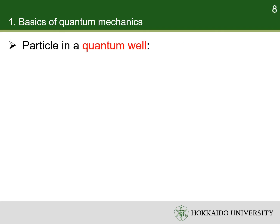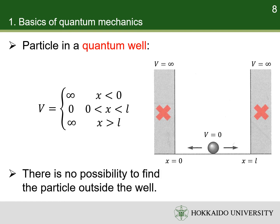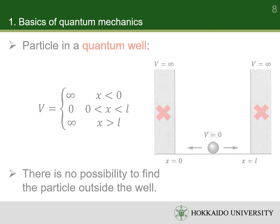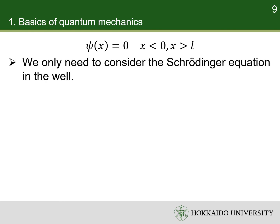We use a particle in a quantum well as an example. A quantum well has such a potential: in the interval between zero and L, the potential energy is zero; elsewhere, the potential energy is infinity. There is no possibility to find the particle outside the well because the potential energy of a particle must be a finite value.